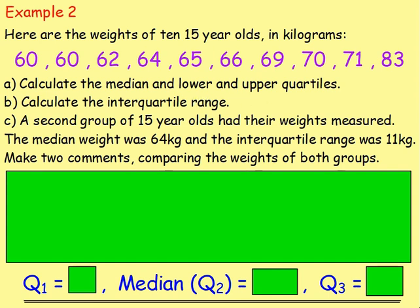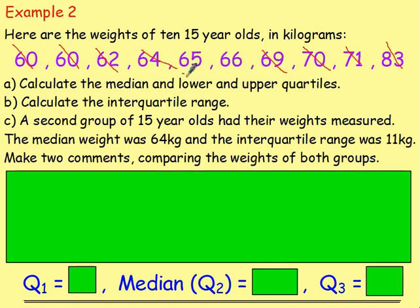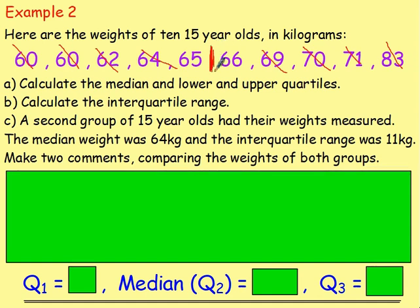For the median — the middle number — cross off one from the left and one from the right repeatedly. We end up with two numbers in the middle: 65 and 66. The median is the number bang in the middle of them, which is 65.5.